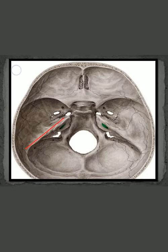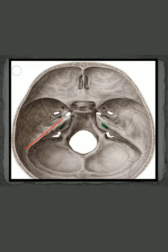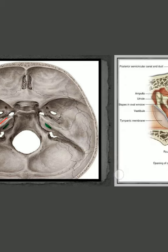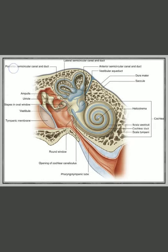In this figure, you can see the interior of the skull bone. These are the different fossas: the anterior cranial fossa, the middle cranial fossa, and the posterior cranial fossa. The portion highlighted in red is the petrous portion of the temporal bone. Here you can see the middle ear cavity or tympanic cavity, located between the external ear and the inner ear. It is related laterally with the tympanic membrane and medially with the inner ear.